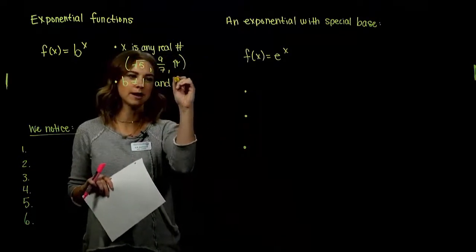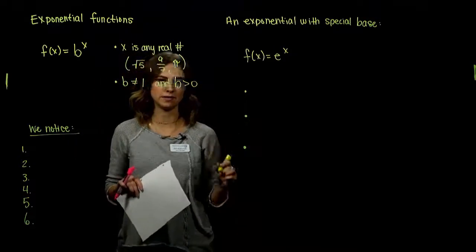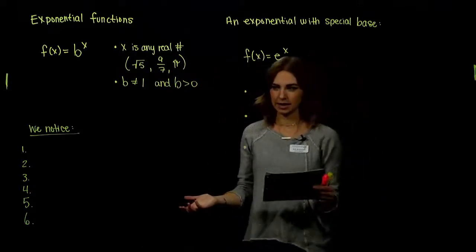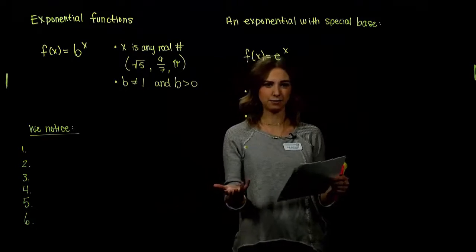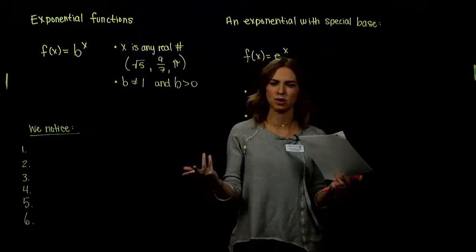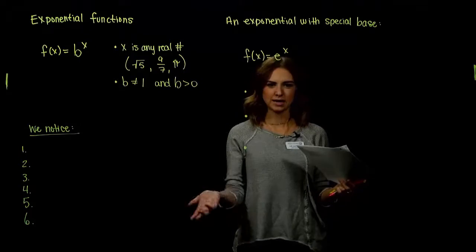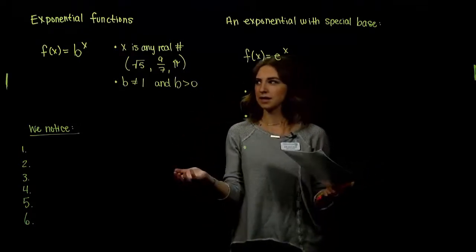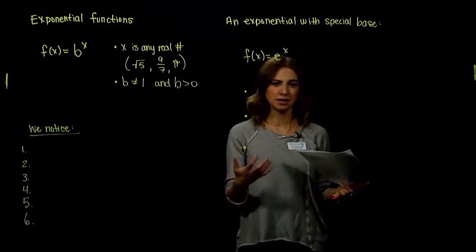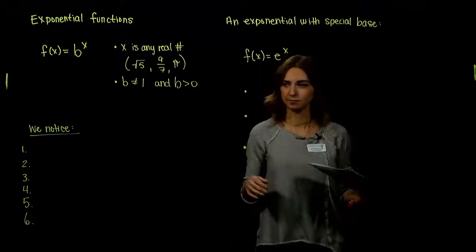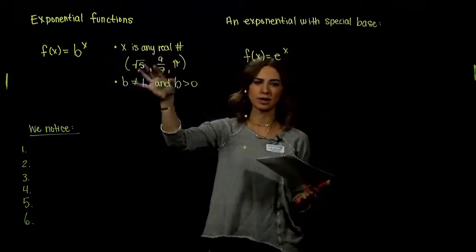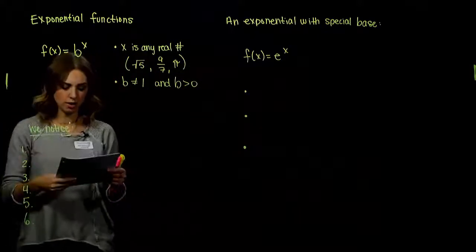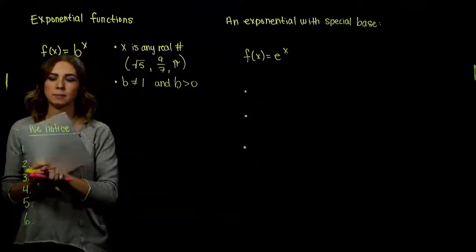The base b also can't be negative or 0 — b must be greater than 0. If b were 0, it's not growing. If b is negative, a negative raised to an even power is positive and to an odd power is negative, so the growth wouldn't be consistent — it would go crazy. So b must be positive, can't be 0, can't be 1.